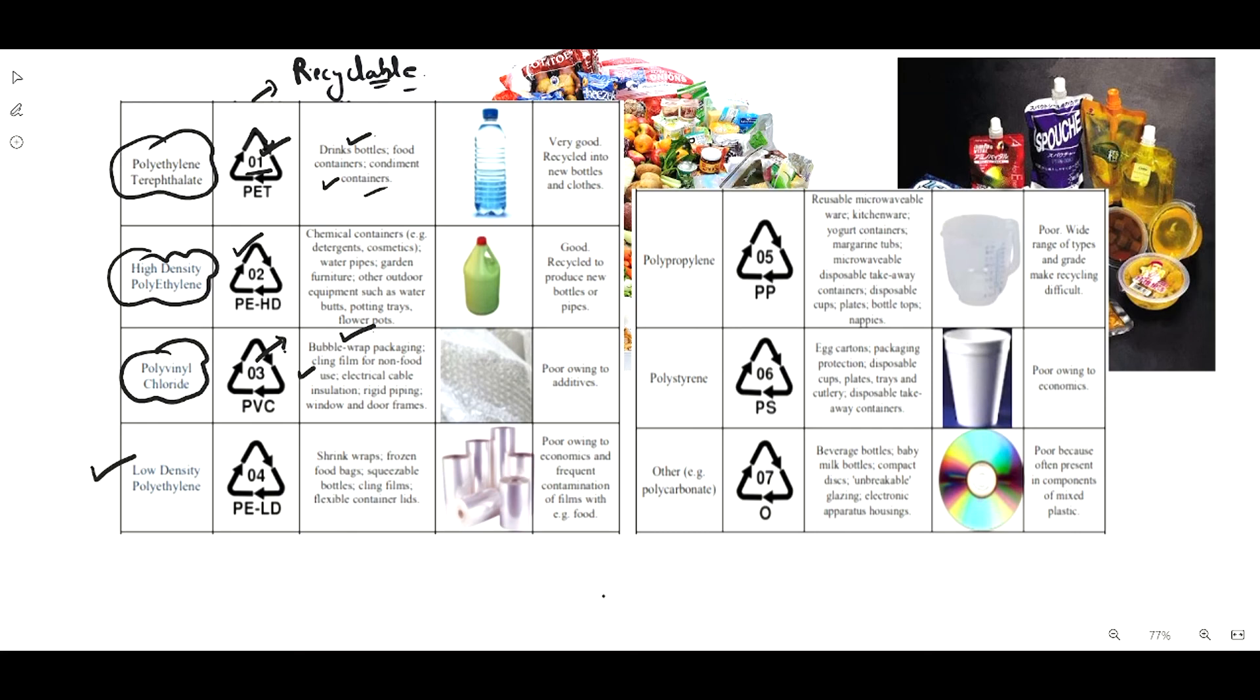Low-density polyethylene (LDPE) comes under code 04 and is used in shrink wraps, frozen food bags, squeezable bottles, cling films, and flexible container lids.